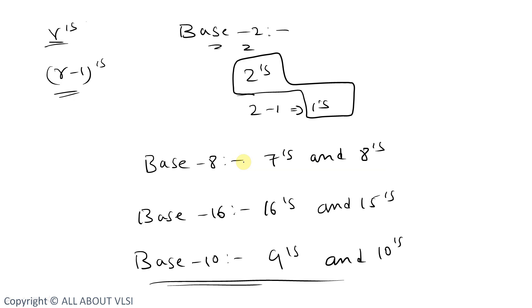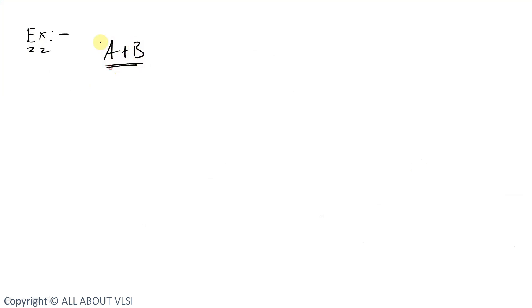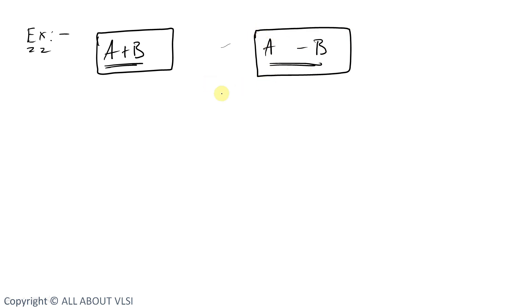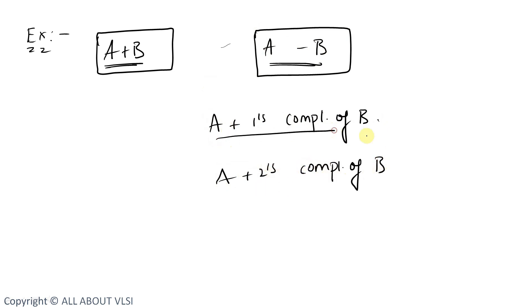We use complements for simplifying subtraction. Consider a scenario: if I want to perform A plus B, I can design an arithmetic circuit for that. But if I need to perform subtraction — that is A minus B — instead of performing that subtraction directly, I can perform A plus the 1's complement of B, or A plus the 2's complement of B.